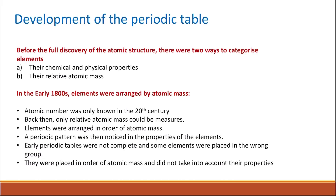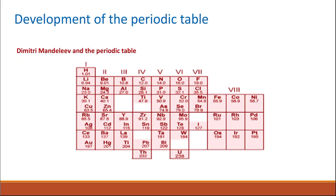Elements were arranged in order of their atomic mass, and scientists noticed periodic patterns in the properties of the elements — each period showed some repeating pattern in properties. This is why it was called the periodic table. However, this early periodic table was not complete, and many elements did not fit well in it. The atomic number and atomic properties were not taken into account.